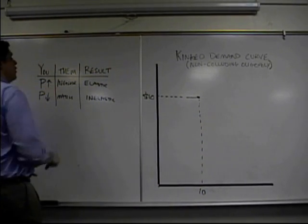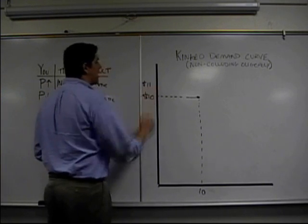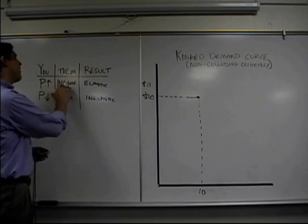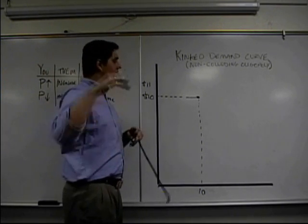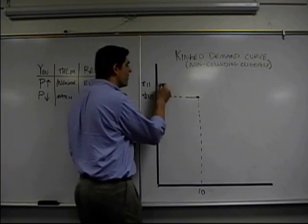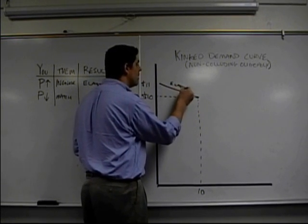For the first one, if you increase your price, let's say you increase your price to $11. We're telling you that the other firms are going to ignore your price increase. They're just going to blow you off. They're not going to increase their prices as well. And the result is a very elastic demand.